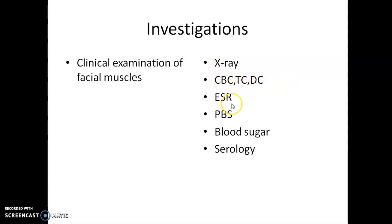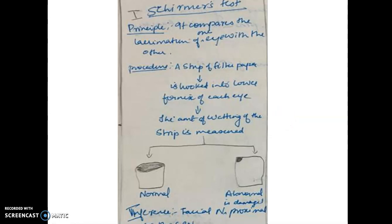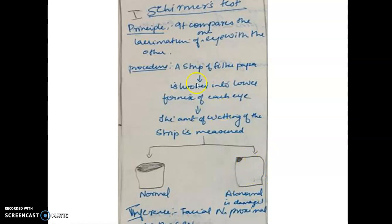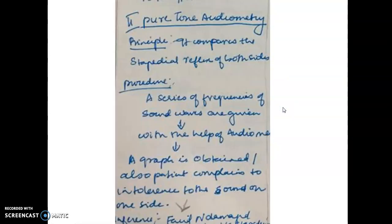For clinical examination, ask the patient to perform various facial expressions, attempt to close the eye while the examiner tries to open the eyelid, and blow out a candle. Investigations include X-ray, CBC — complete blood count with total count, differential count, ESR — peripheral blood smear, blood sugar, and serology to identify other causes. For topographical localization — identifying where the facial nerve is damaged — the Schirmer's test compares lacrimation between both eyes using filter paper placed over the lower eyelid for five minutes; reduced wetting indicates damage proximal to the greater petrosal nerve.